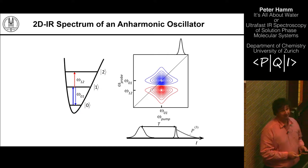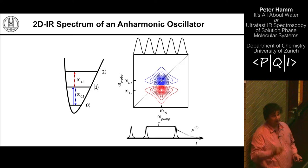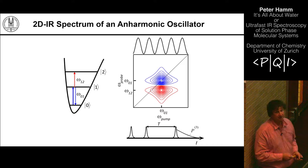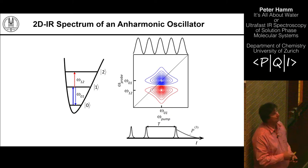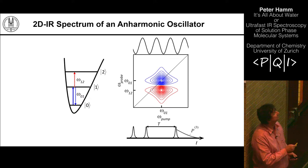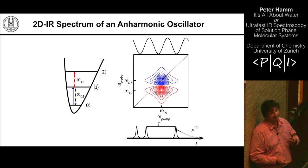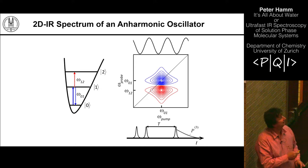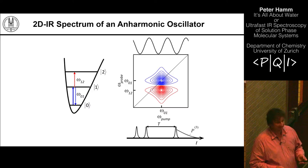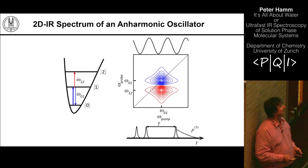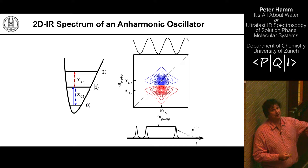Nowadays, mostly for practical reasons, we don't use a narrow-band pump pulse scanned across the transition. Instead we use a pair of two pulses. In the frequency domain this looks like a modulated spectrum, and we scan the time delay between these two pulses to change the modulation. In essence we do the same pump-probe experiment, but we have to do a Fourier transform with respect to this delay time to recover the spectral information. Conceptually speaking, you can think of it as a pump-frequency-resolved pump-probe experiment.